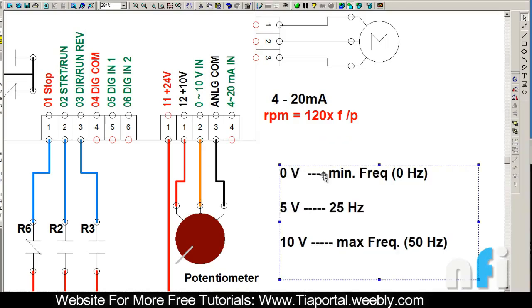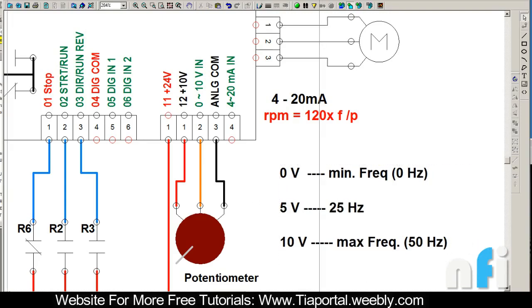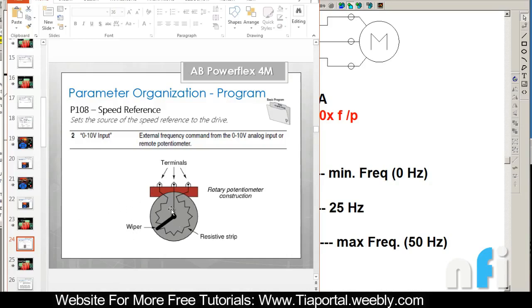When you have zero volt, the drive will run at minimum frequency, zero hertz. When the potentiometer is giving 10 volt, it will run the drive at maximum frequency, and in between 5 volt it has 25 hertz. So you'll find that at 1 volt of jump you have 5 hertz of increase, because at 10 volt it's 50 hertz. At 1 volt it will be 50 divided by 10, which is 5 hertz.